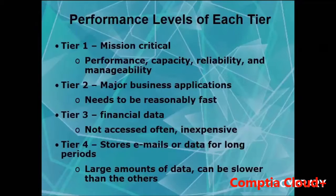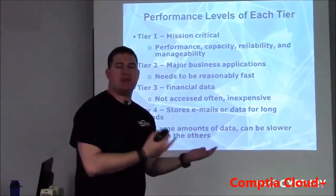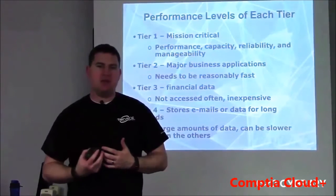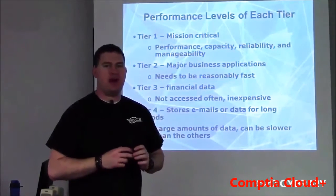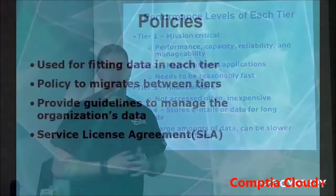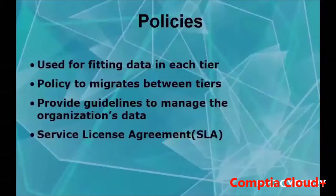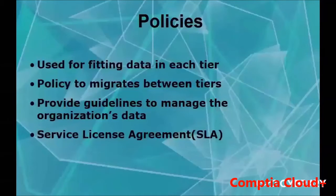Tier 4 is for storing emails or files for long periods — used in companies where information is accessed only every now and then. Policies determine how information is fit into each tier and how the organization and customer will handle the data. A service license agreement is an agreement between the customer and provider covering what they can access, how they access it, what they can store, and how often the information is available to them.